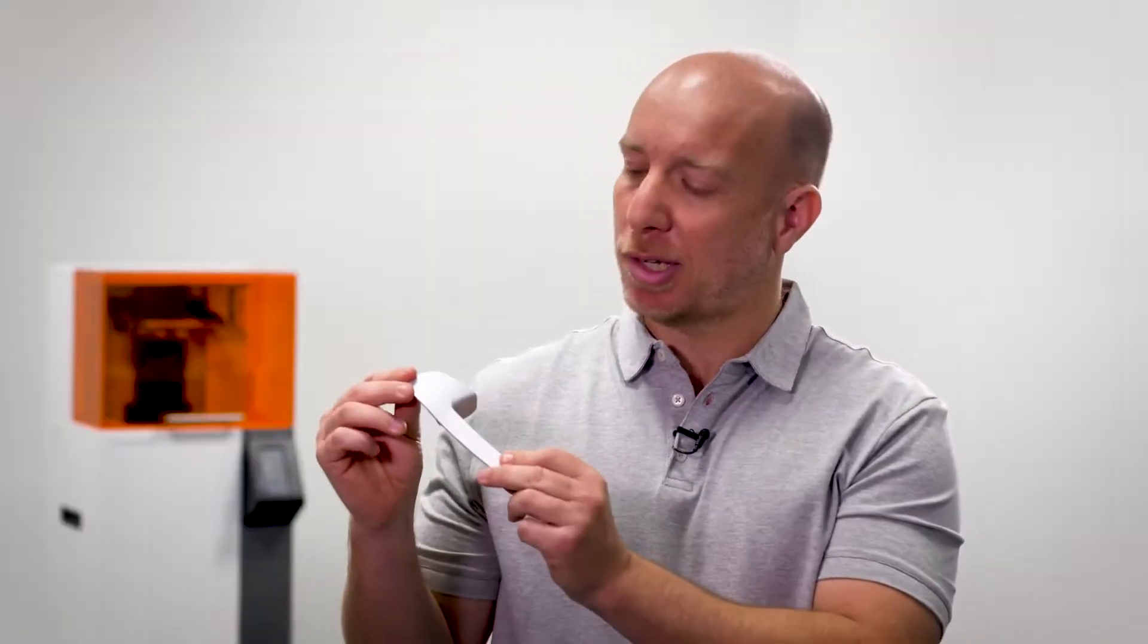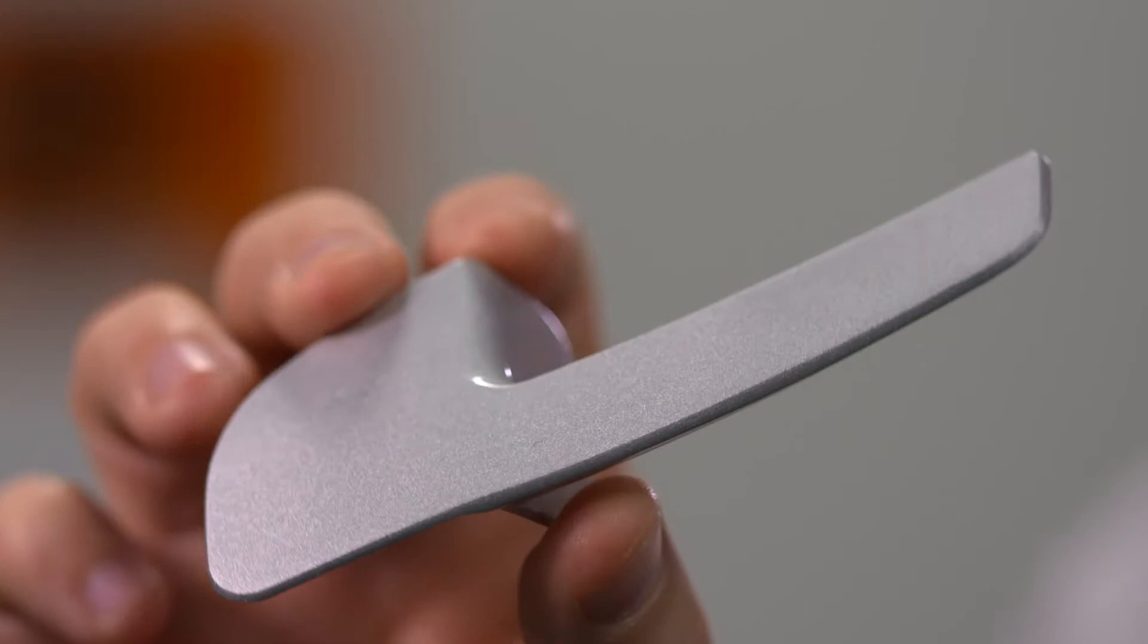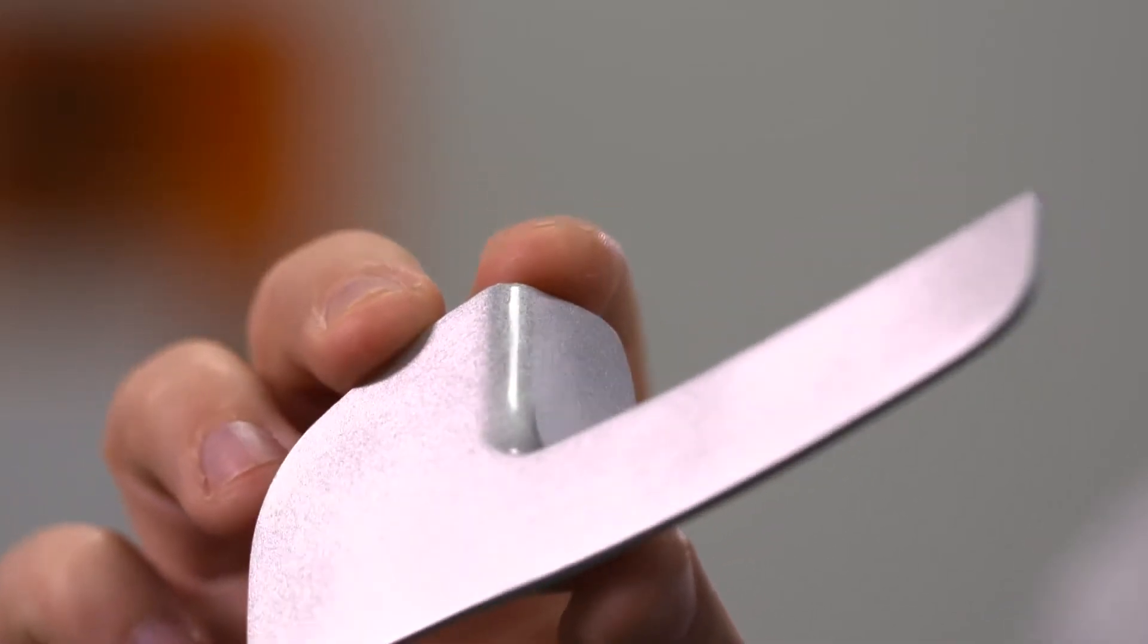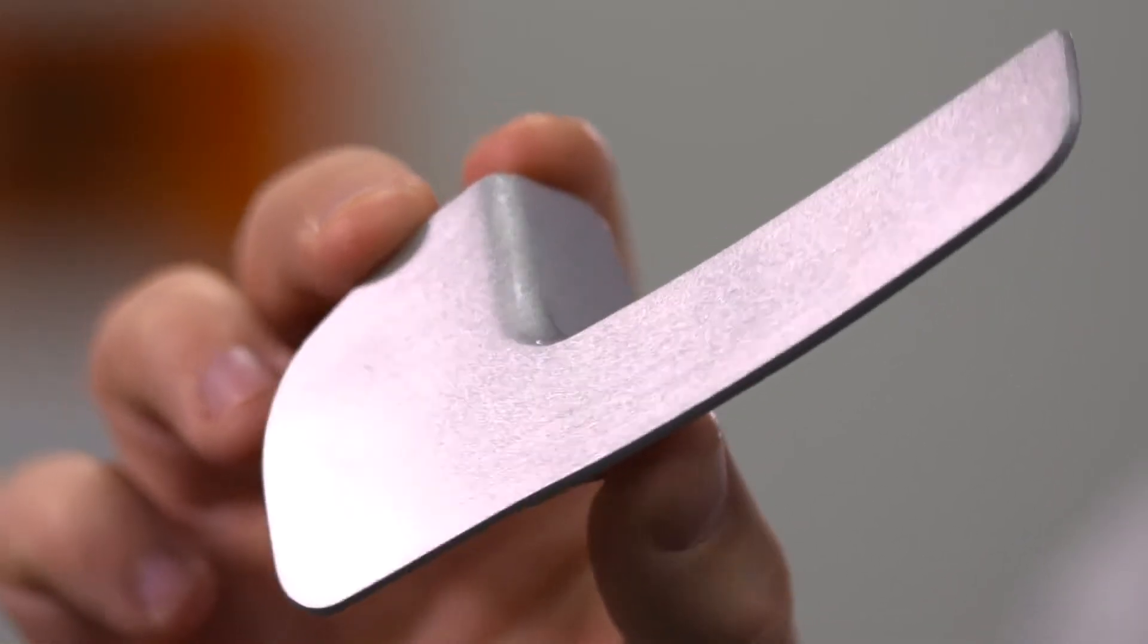Take for example this car door handle prototype, printed in under 40 minutes. The exceptional surface quality of this part makes it ideal for painting or plating.